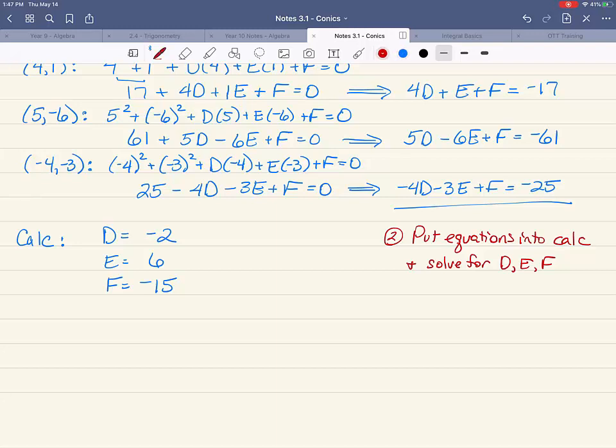So after we've found our answers, we are going to write the general form equation that we just found. So in reality, we have found the equation of a circle. It's a general form equation, but it is an equation. So it will be x squared plus y squared minus 2x plus 6y minus fifteen equals zero. If that's all they want, if they just say write the equation of a circle, you're done.